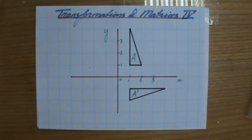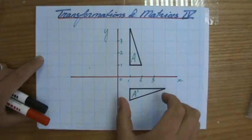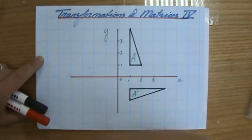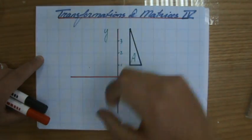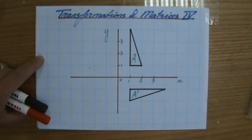So another example question for you where you are given an object and its image and you have to say under which or which matrix has been used to map object A onto each image A'.